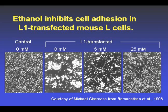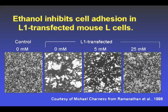L cells, which are mouse fibroblasts, were engineered to express the human gene for the cell adhesion molecule L1. These are the three slides labeled L1 transfected. The cells were allowed to aggregate by gentle shaking for 30 minutes. Control cells, in the leftmost picture, form few clusters of adherent cells. Cells transfected with human L1 cell adhesion molecule aggregate much more than control cells. The second picture from the left shows the aggregation — the white clumps — when alcohol is not added to the system. The right two pictures show a dose-dependent decrease in aggregation when ethanol is added to the medium.